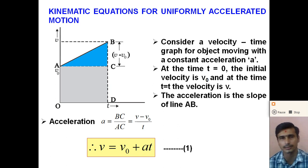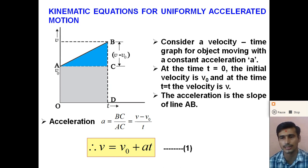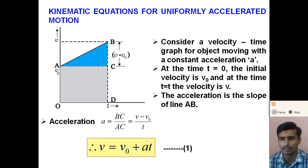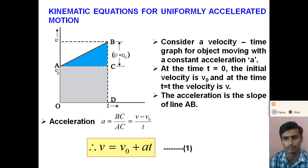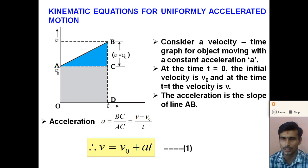First of all, what do we mean by uniformly accelerated motion? When an object moves with constant acceleration, the motion is said to be uniformly accelerated motion. From the velocity-time graph, if the velocity-time graph is a linear straight line, the motion is said to be uniformly accelerated motion. If the acceleration of an object remains constant with time, we say the motion is uniformly accelerated.